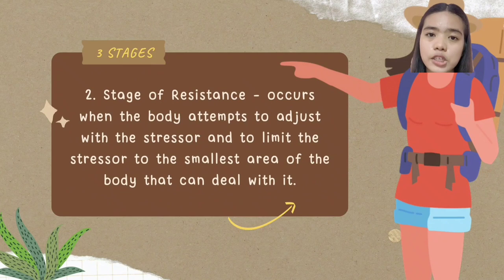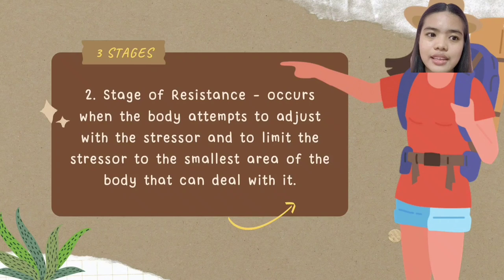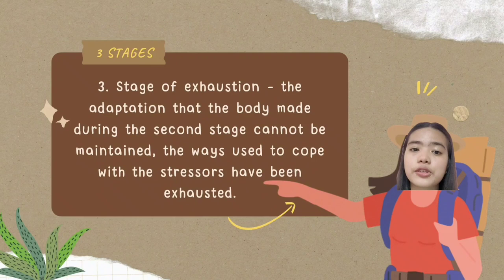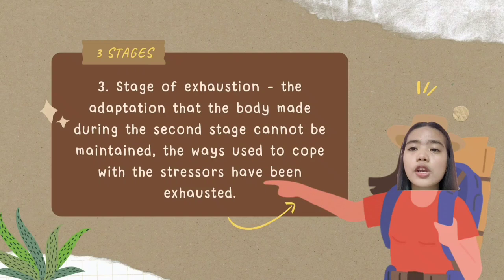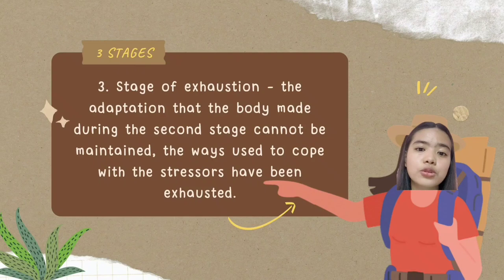Next is the stage of resistance. This occurs when the body attempts to adjust to stressors and to limit the stressor to the smallest area of the body that can deal with it. Lastly, the stage of exhaustion is the result of prolonged or chronic stress. This stage only occurs when the body undergoes extended periods of stress. Buckling with stress for a longer period can drain your physical, emotional, and mental resources to the point where your body is depleted and no longer has the capacity to fight against stress. In this stage, you are also prone to develop mental health conditions.